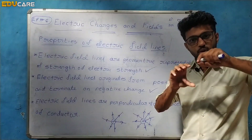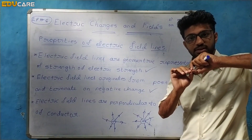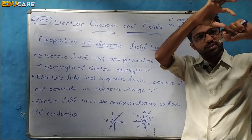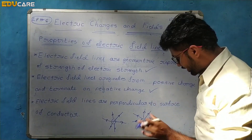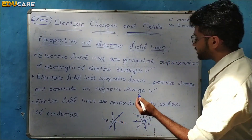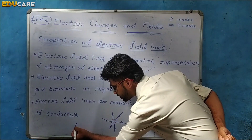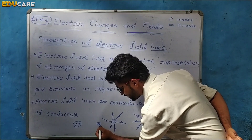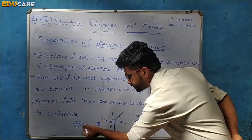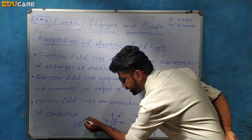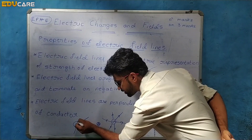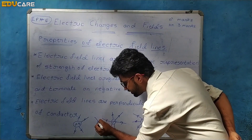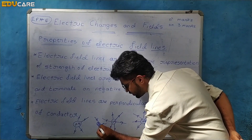The electric field from a positive charge originates radially outwards. For a negative charge, the field lines radially inwards and terminate. In this diagram, the electric field is radially outwards from the positive charge, and for the negative charge it is radially inwards.